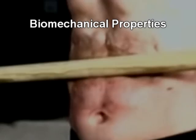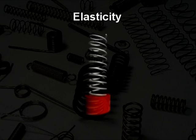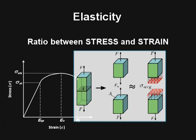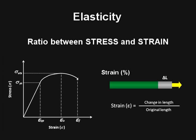Biomechanical properties are related to the response of a body to an applied force. Elasticity is the ability of a body to deform with complete reversibility, and is calculated as the ratio between stress and strain. Stress is defined as the load per cross-sectional area. Strain is the percent change in length and is dimensionless.